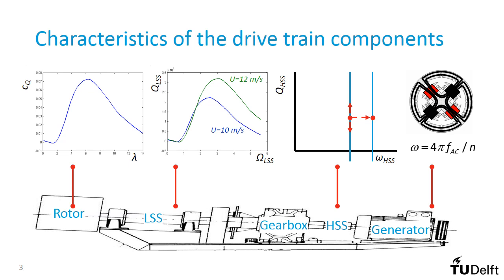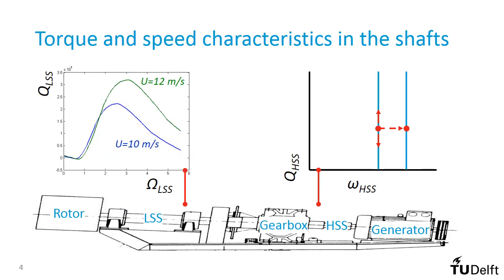Therefore we cannot directly judge from them how the system is going to behave. The next slide will show how the connection of speed and torque through the gearbox properties can help with this. The torque-speed characteristics in the low-speed shaft and high-speed shaft are repeated here. For the next step it is good to realize what these characteristics actually mean. Let's first look at the low-speed shaft. As a thought experiment, disconnect the low-speed shaft from the gearbox and instead connect it to a testing machine.